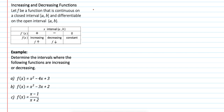Let f be a function that is continuous on a closed interval [a,b] and differentiable on the open interval (a,b). Select a number between a and b and substitute into f prime. If you get a positive number then f is increasing. If you substitute into f prime and you get a negative number, then f is decreasing.